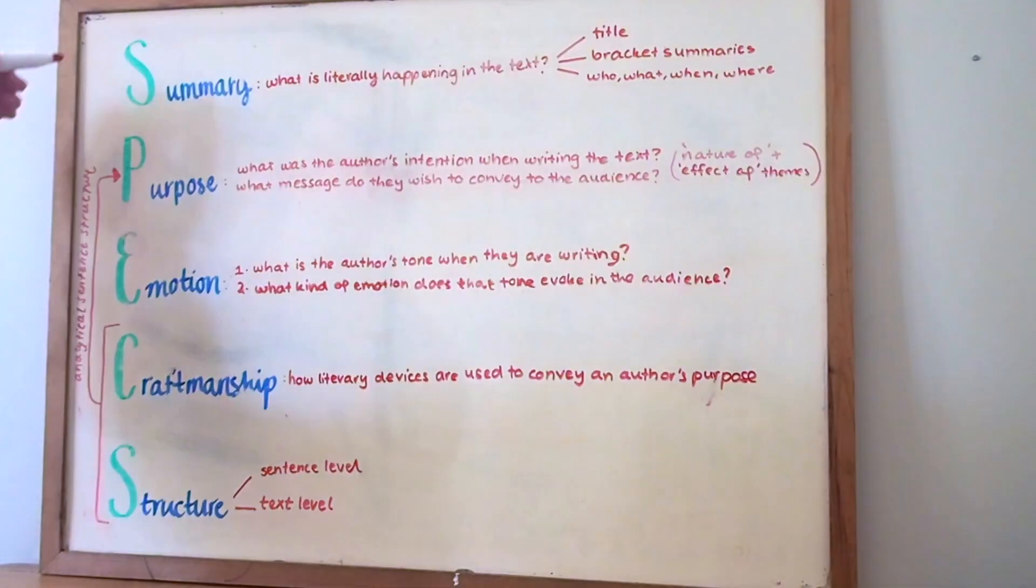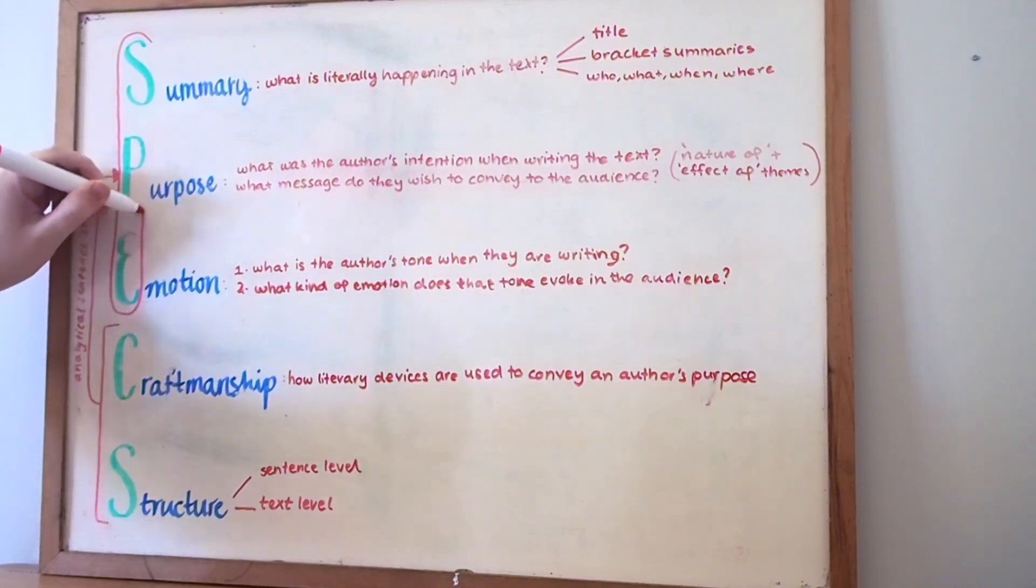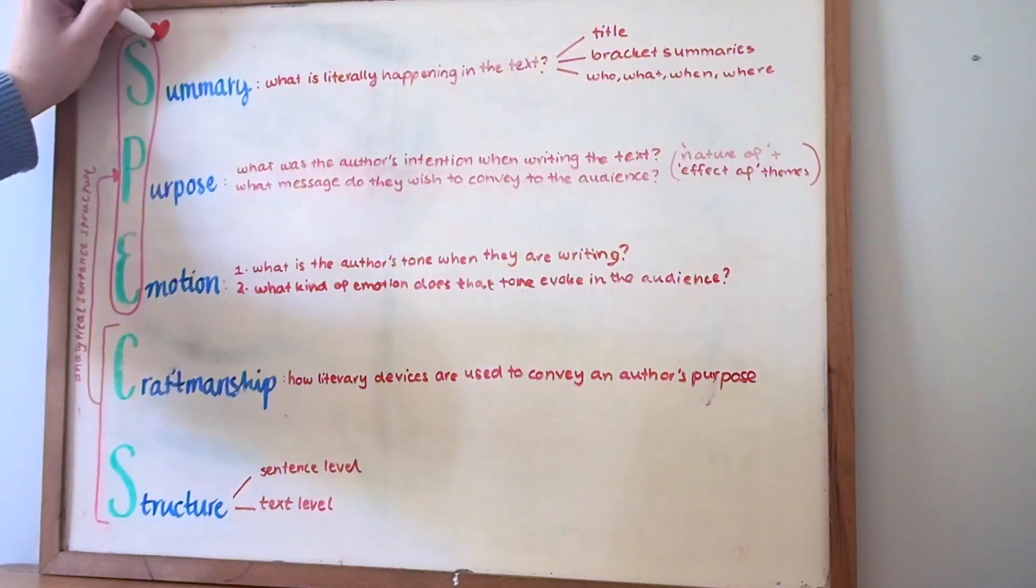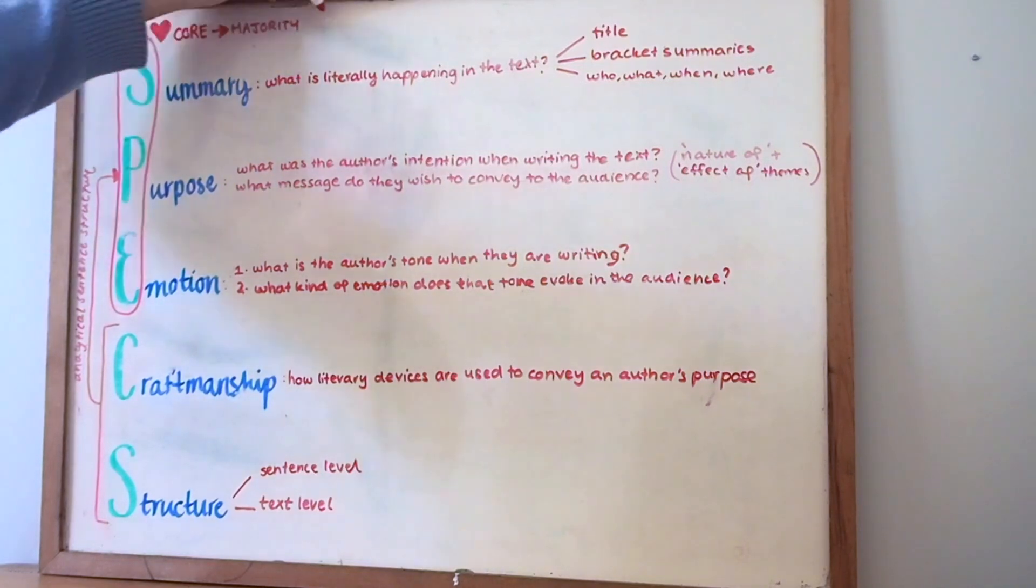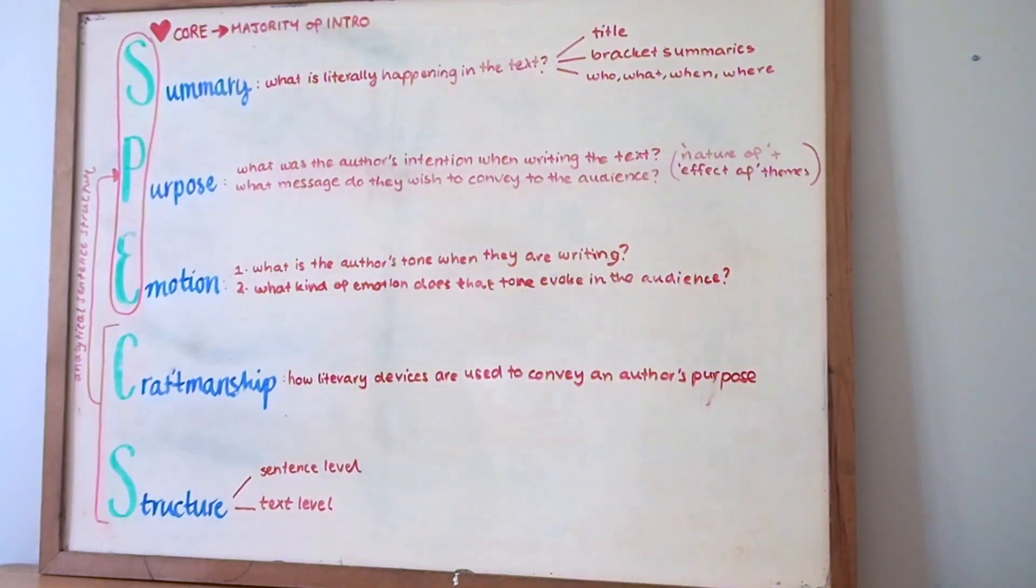So overall, not only did I find this SPECS acronym helpful when I was annotating my texts but also when I was deciding on my essay structure. So summary, purpose and emotion as well as your interpretation of the guiding question form the core of your interpretation of the unseen text and hence will form the content of your introduction. These are all working towards criterion A, your understanding of the text.